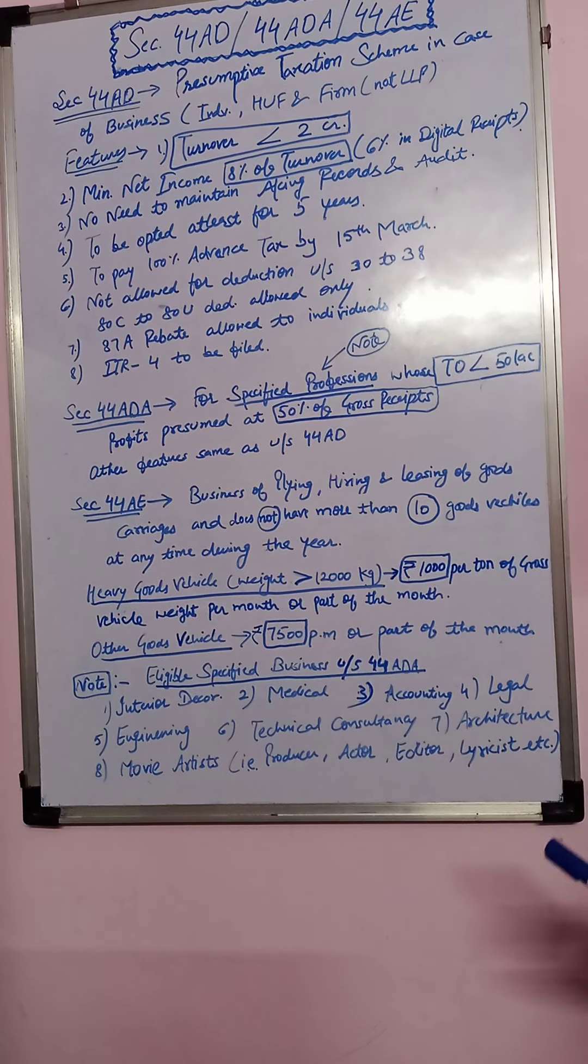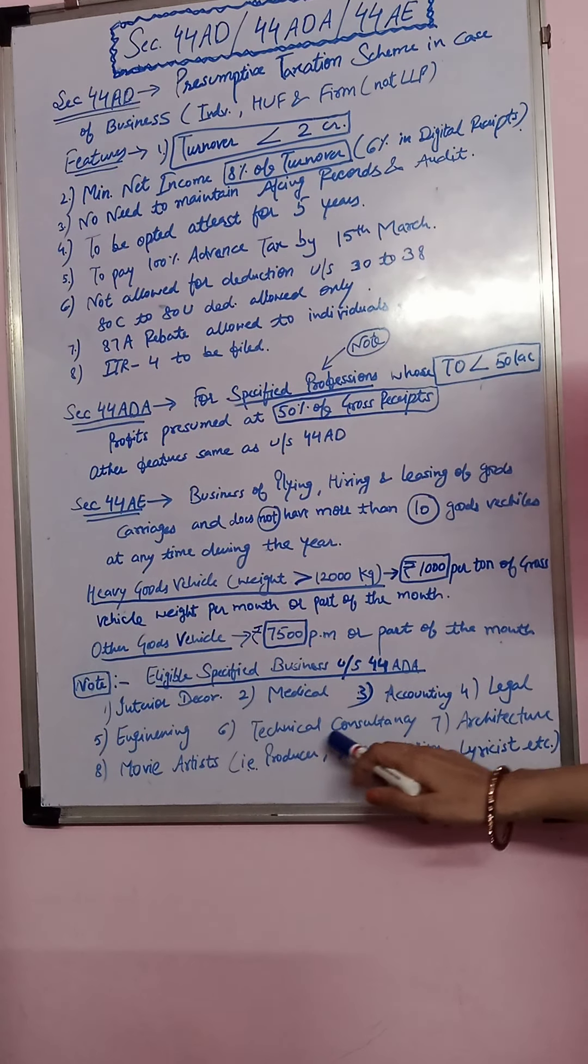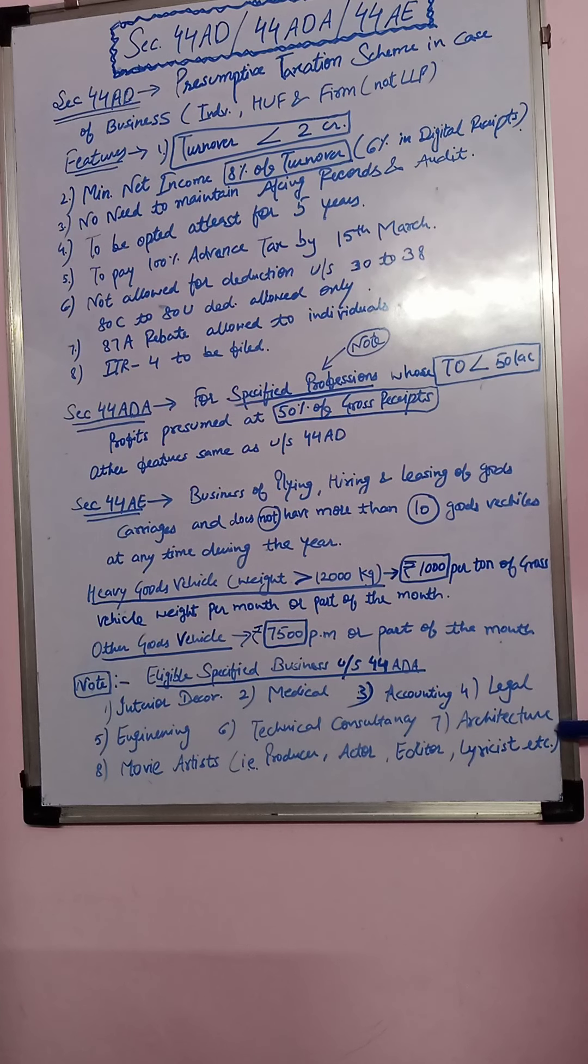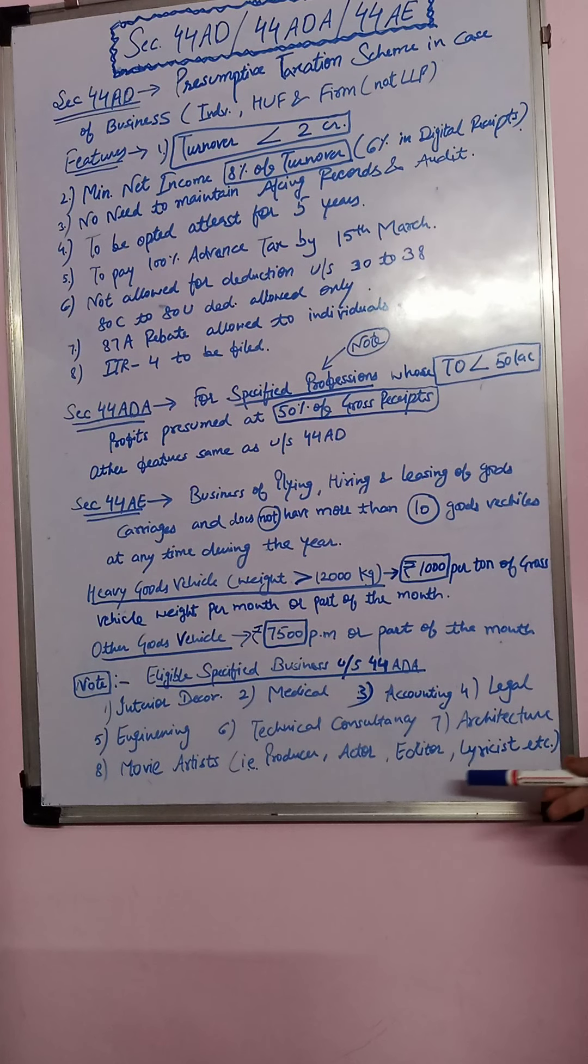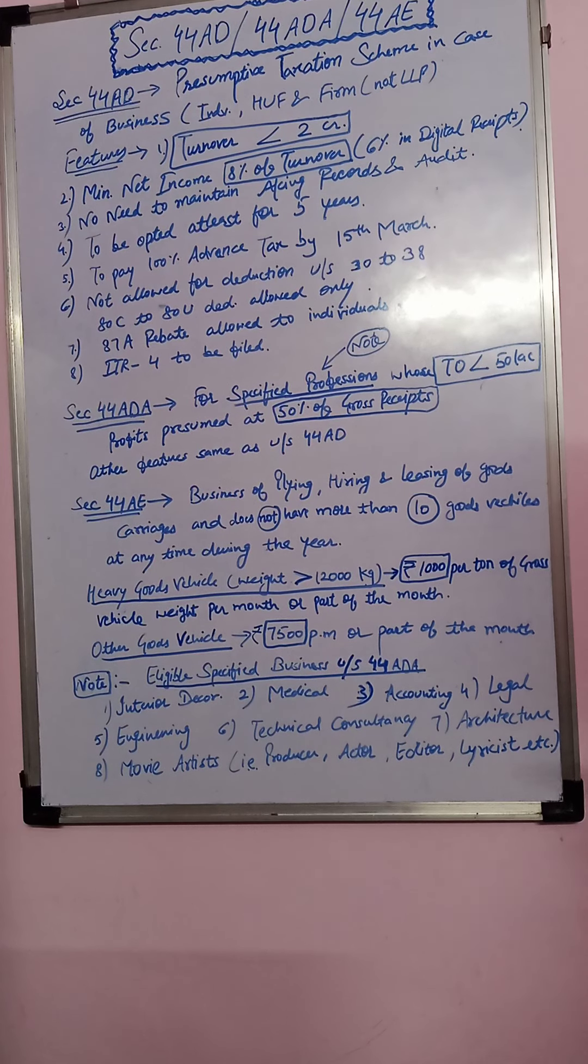Eligible specified business under this scheme: First is interior decoration. Second is medical. Third is accounting. Fourth is legal. Then engineering. Then technical consultancy. Then architecture. Then movie artist, which includes producer, actor, editor, lyricist, etc. So these are all eligible businesses where you can take deemed income.